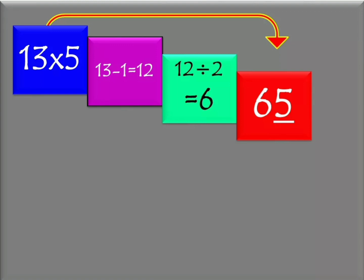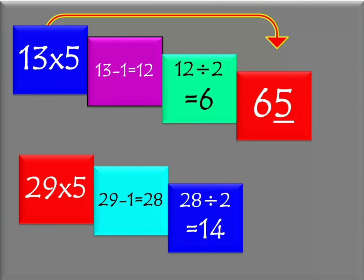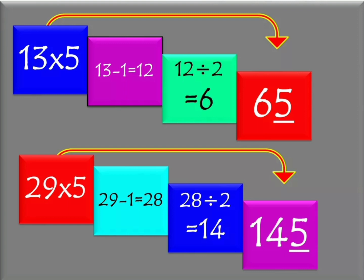Lastly, we have 29 and 5. What is the product of 29 and 5? 29 is an odd number. We need to subtract 1 from 29 — we'll get 28. Half of 28 is 14. Since 29 is an odd number, we affix 5 at the ones place. From 14 it will become 145. Therefore, 29 times 5 is 145.